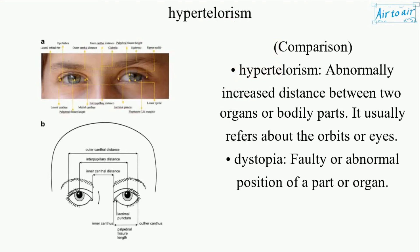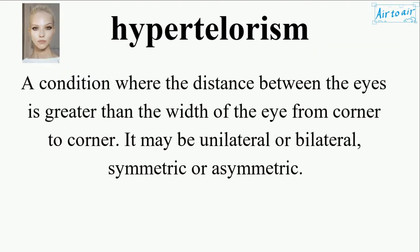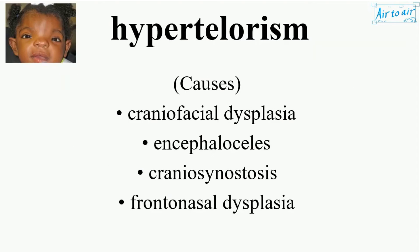Comparison — Hypertelorism: abnormally increased distance between two organs or bodily parts; usually refers to the orbits or eyes. Dystopia: faulty or abnormal position of a part or organ. Compare also with Telecanthus (Dystopia canthorum).